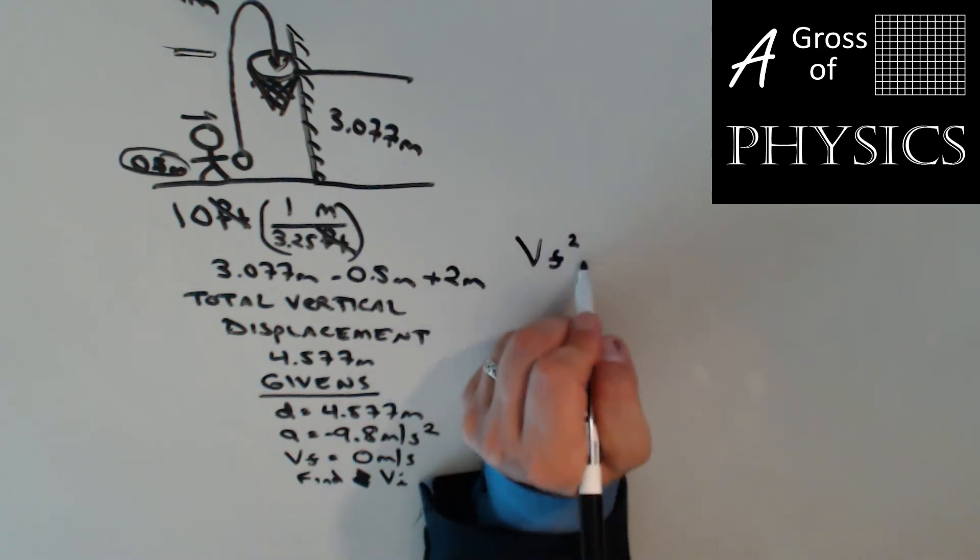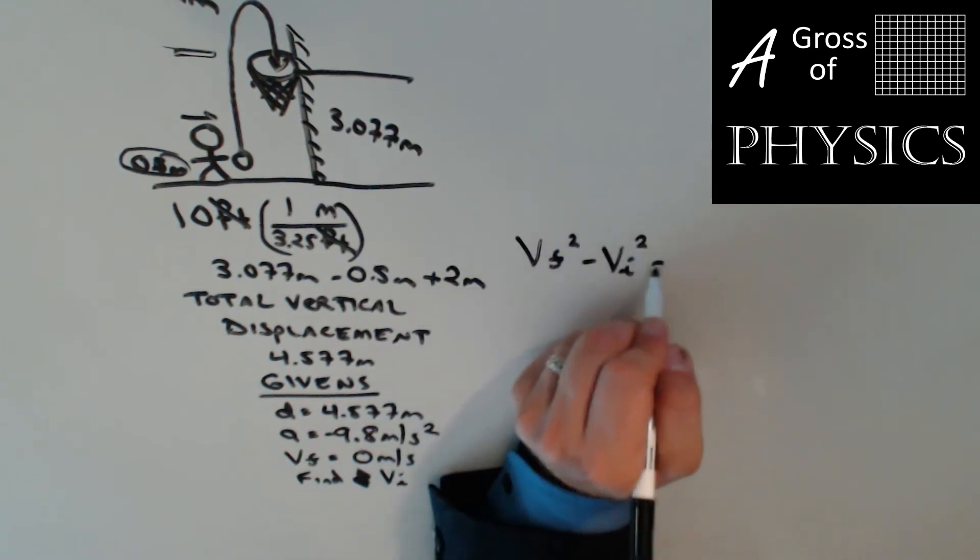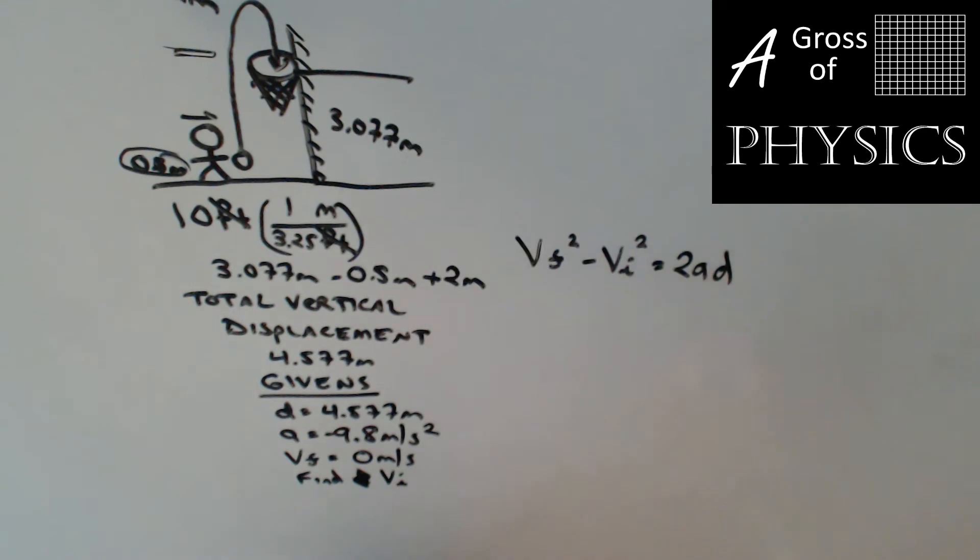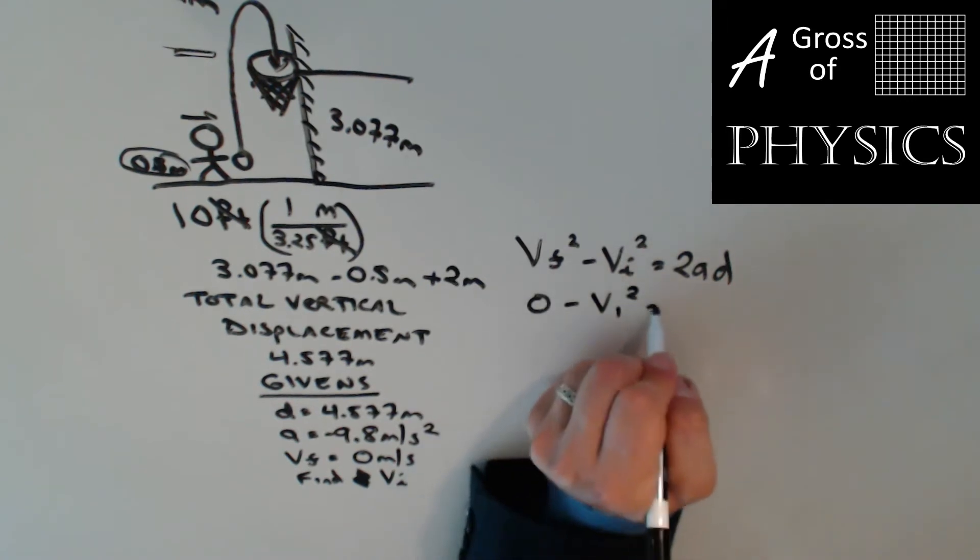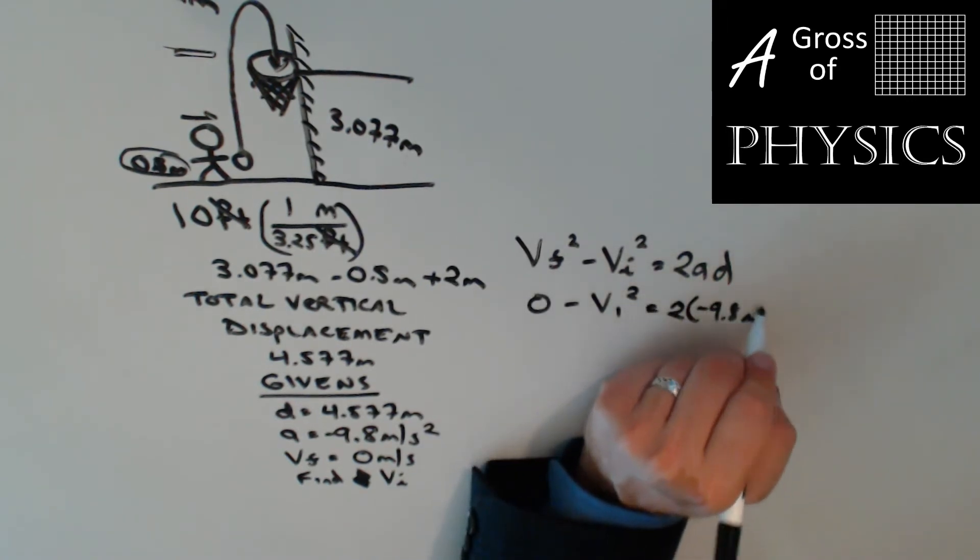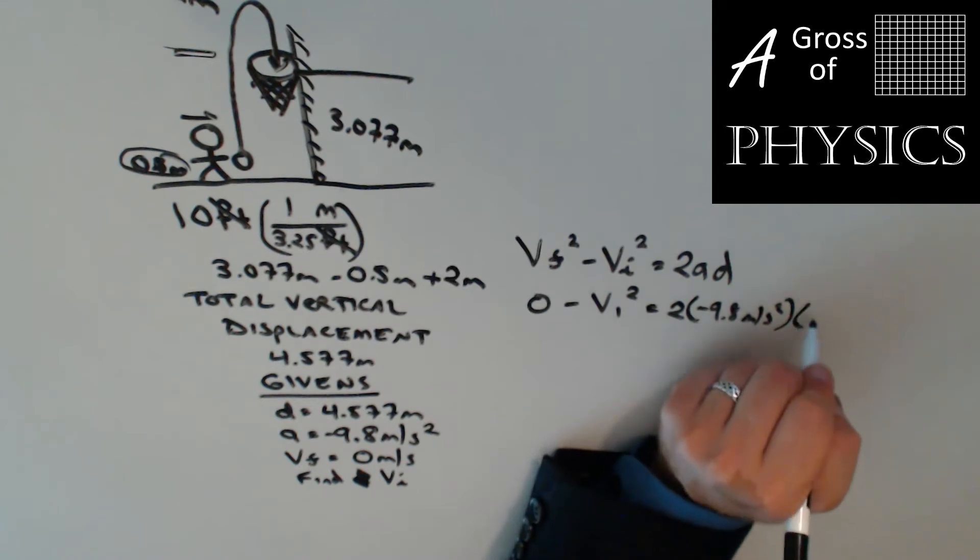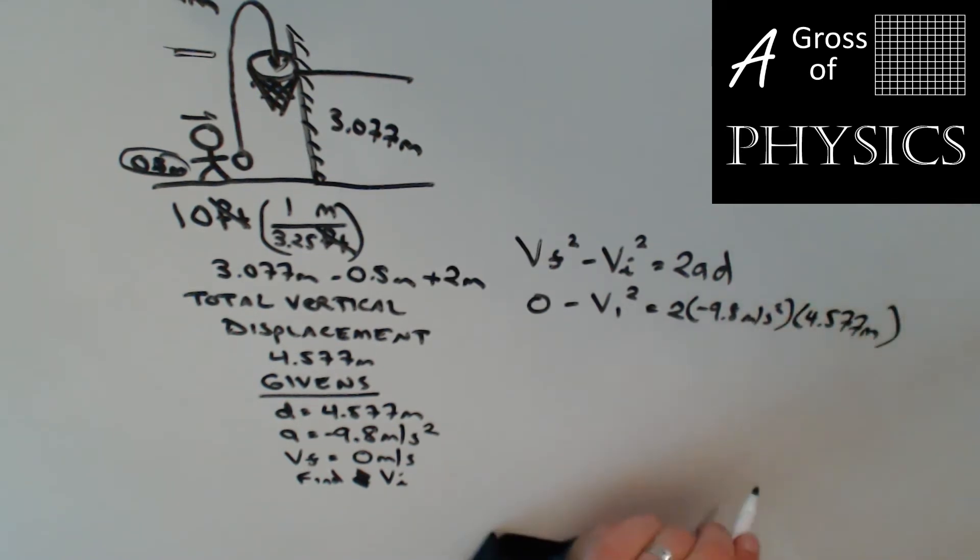Vf squared minus Vi squared equals 2ad. 0 squared minus Vi squared, still don't know it, equals 2 times negative 9.8 times 4.577 meters.